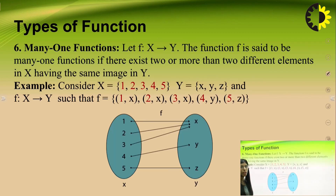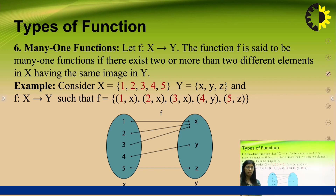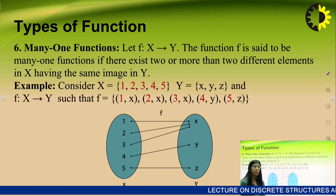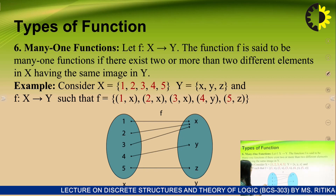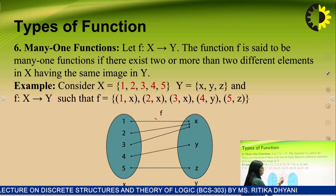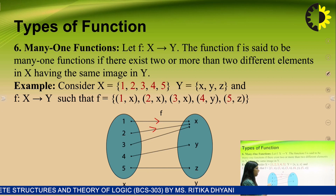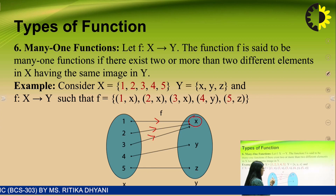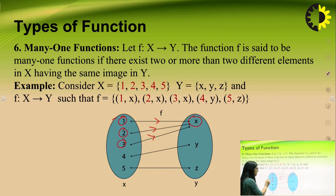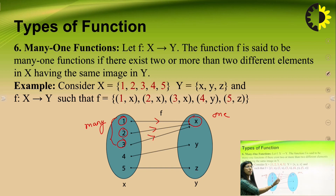The last type is the many-one function. As the name suggests, when multiple elements of the first set have the same image in the second set, the function is called a many-one function and the mapping is called a many-one mapping. For example, 1 is associated with X, 2 is also associated with X, and 3 is also associated with X. So element X has three pre-images — many elements are associated with only one element. This is known as a many-one function.